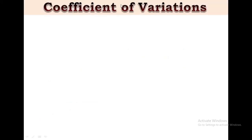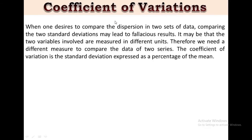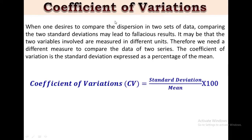Coefficient of variation: The standard deviation is useful as a measure of variation within a given set of data. When one desires to compare the dispersion in two sets of data, comparing the two standard deviations may lead to fallacious results. It may be that two variables are involved or measured in different units. Therefore, we need a different measure to compare the data of two series. The coefficient of variation is the standard deviation expressed as a percentage of the mean, calculated as: coefficient of variation equals standard deviation divided by mean and multiplied by 100.